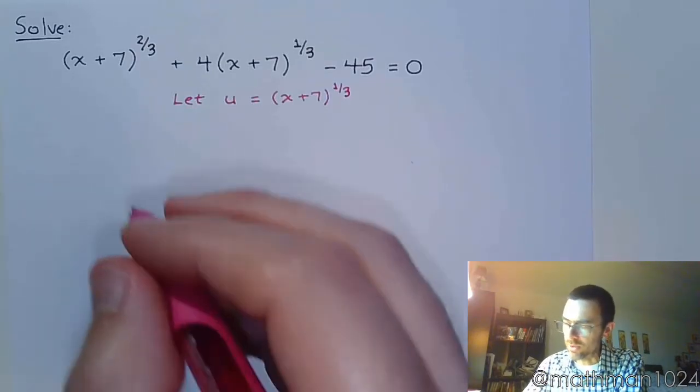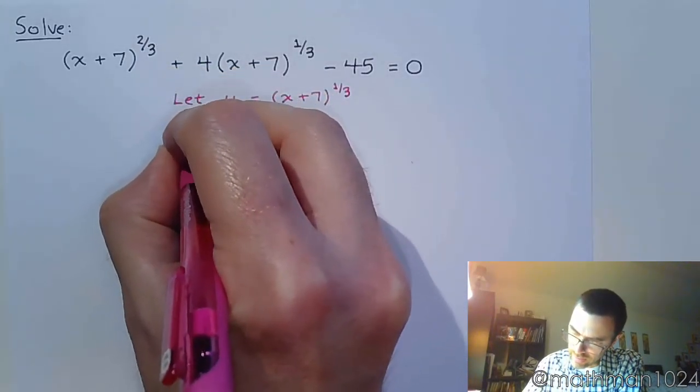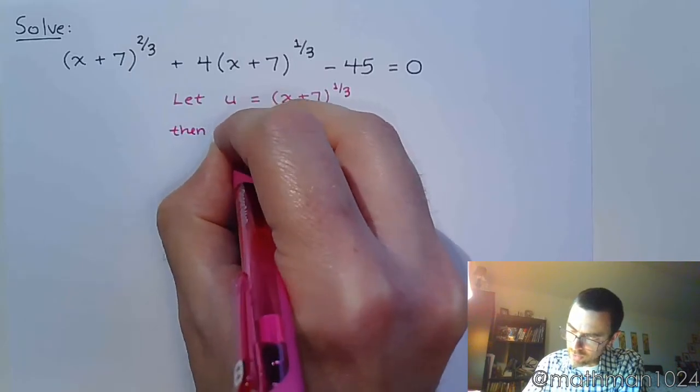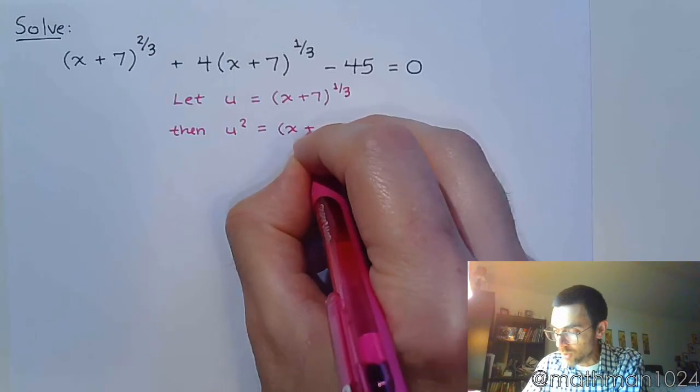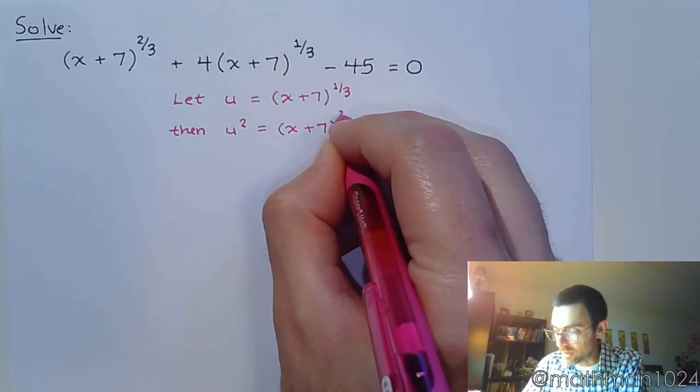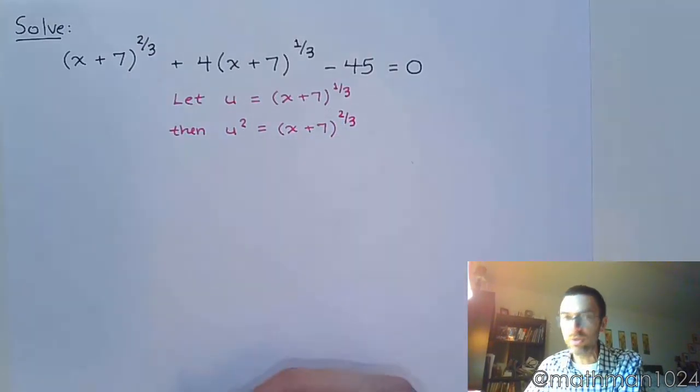Now if u is equal to that, that would then mean that u squared, remember when you square something you double the power, so then u squared would be x plus 7 to the 2/3.